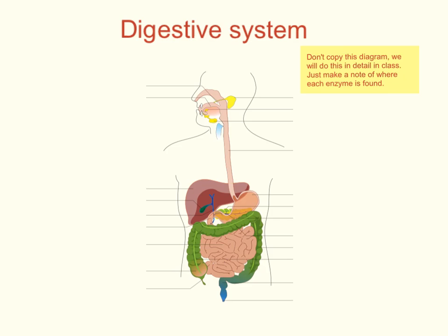This diagram has more label lines than we need, so we'll just concentrate on the bits we need to know. Food goes in through the mouth, which breaks up food and mixes it with saliva. There's one enzyme in saliva — salivary amylase — and salivary amylase breaks down starch, so starch is the substrate, and the products formed are small sugar molecules.